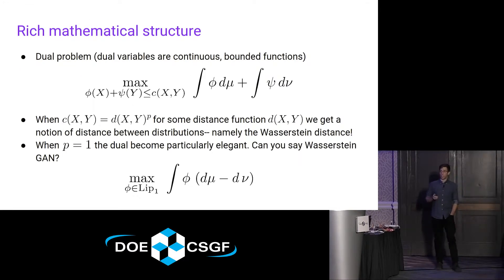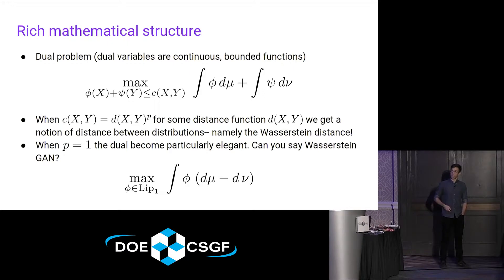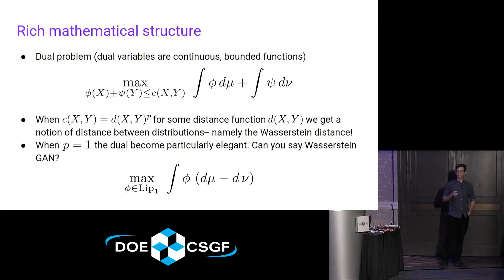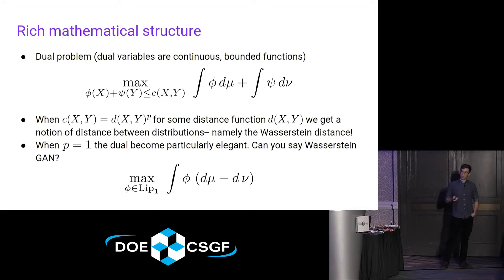The dual is just maximizing — if the primal is in the space of measures, the dual is in function space — so it's maximizing a pair of functions with a pointwise restriction. There's a nice intuitive interpretation: if you were going to charge someone a cost for picking up mass from a point x and delivering it to a point y, you want to maximize your profit. You increase the profit to the point at which it is equally efficient for someone to move the mass themselves or to pay you to move it.